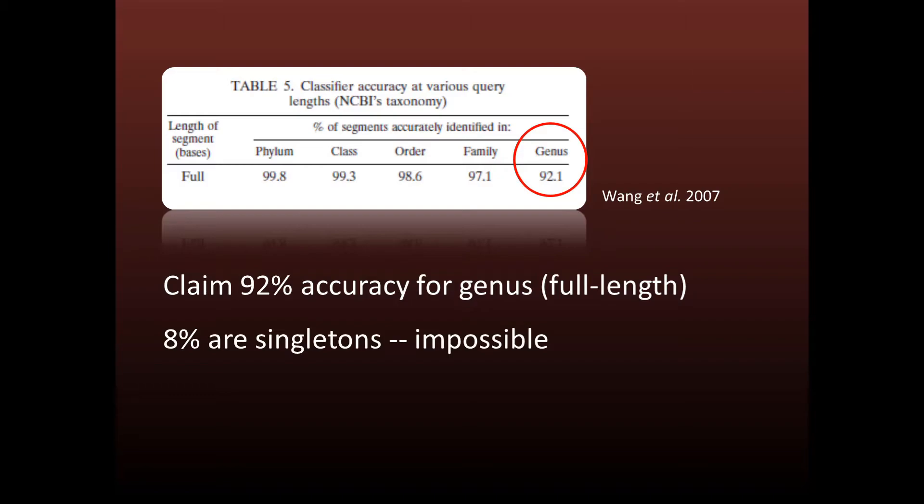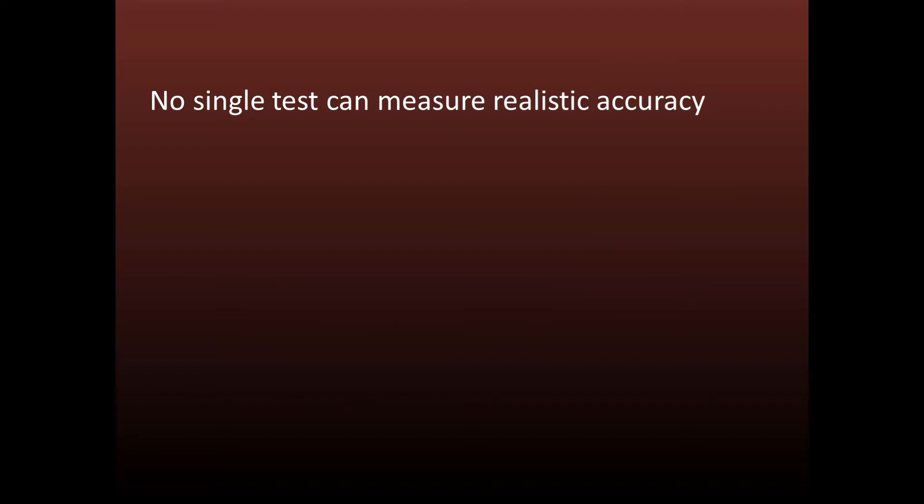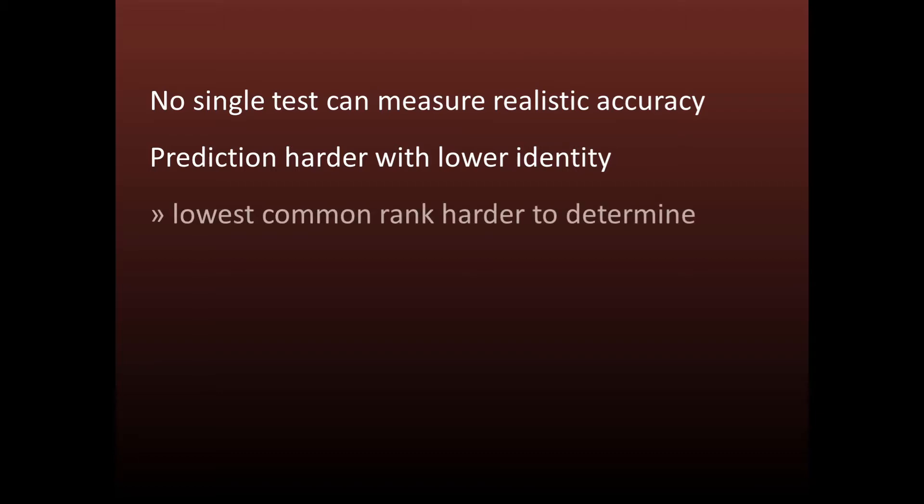Thus, the maximum possible accuracy is less than 100% due to the singletons. For the other genera, classification is easy because there's always at least one highly similar sequence in the reference. A key point to keep in mind is that no single test can indicate the performance you'll get in practice because accuracy is strongly dependent on the data. Prediction gets harder with lower sequence identity because the lowest common rank is harder to determine and there will be more novel groups.